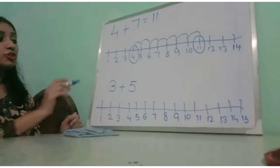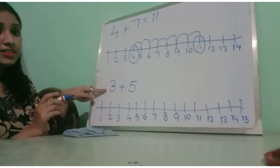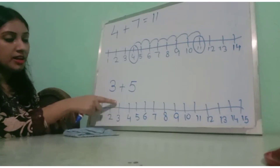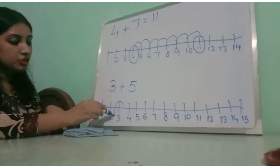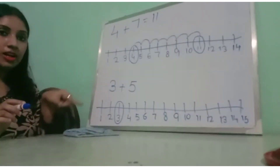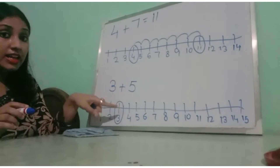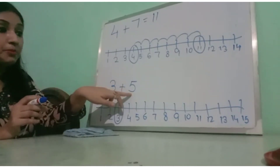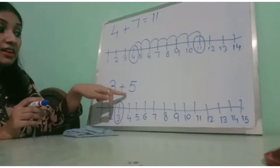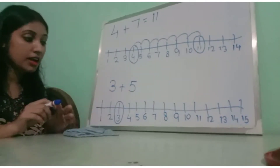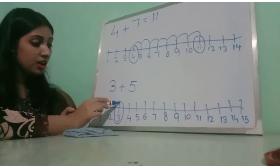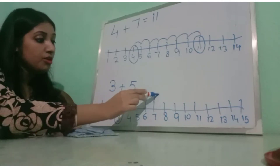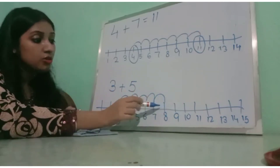ठीक है, तो यहाँ पे first number है 3। तो number 3 की number line कौन सी है? यह है — हम इसको circle कर देते हैं। तो 3 के घर से कितने times jump करना है? 5 times। 3 के घर से 5 times jump करते हैं।